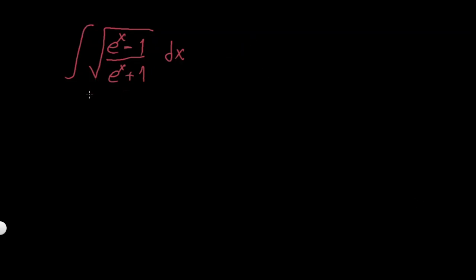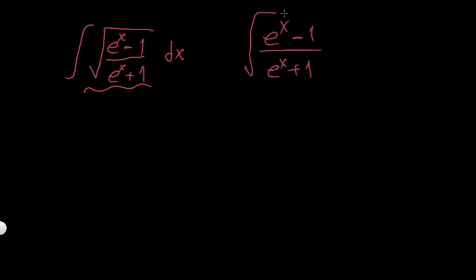Hi there, I have an interesting integral problem for you. I'll call this whole expression u — specifically, e to the x minus 1 over e to the x plus 1 equals u. So now I only need dx; I already said this part is u, so I need du. But if I differentiate both sides directly, this is going to be horrible.